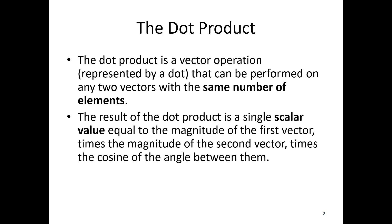And the result of the dot product is a single scalar value, meaning it is not a vector as the result, that's equal to the magnitude of the first vector times the magnitude of the second vector times the cosine of the angle between them. So if I have a dot b, a and b are both vectors, same length or same number of elements, then the magnitude of a times the magnitude of b times the cosine of theta, or theta is the angle between the two vectors, is going to be my dot product.